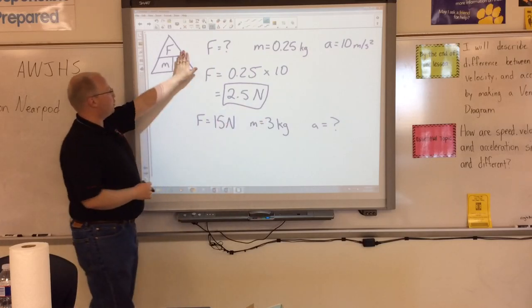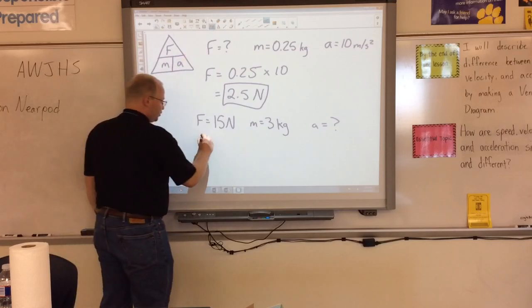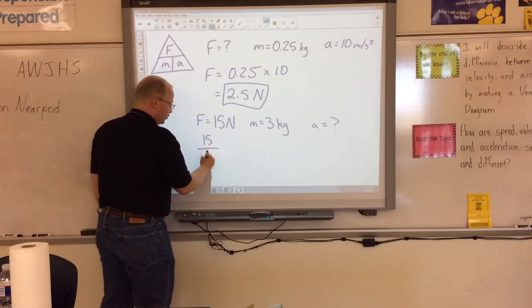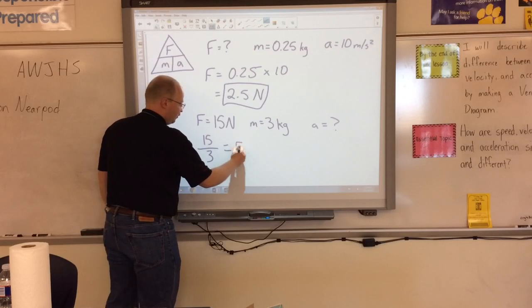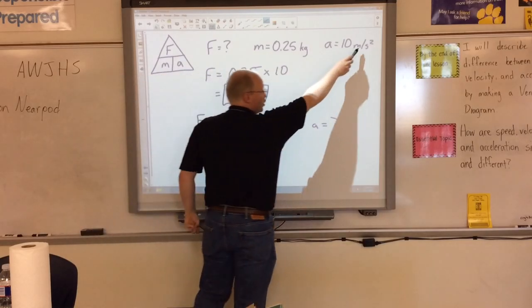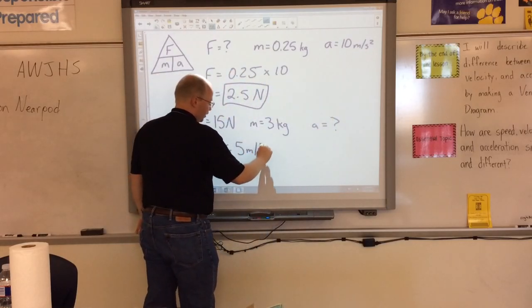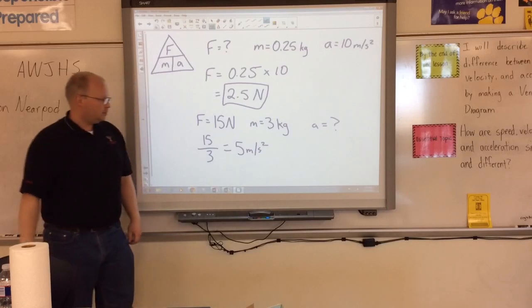So how much acceleration will that toy car have with 15 newtons of force and 3 kilograms of mass? I'm looking for A, so I'm going to cover up A. I'm left with F over M. So force, 15, divided by my mass, 3. 15 divided by 3 is 5. 5 what? The acceleration, the units are always going to be the same when we're doing this example. Meters per second squared.